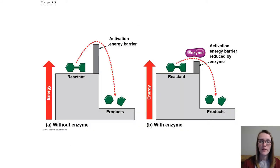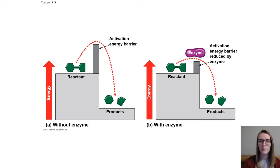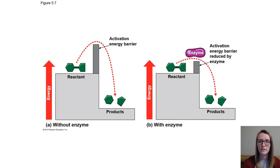We have the two diagrams side by side — one without the enzyme and the other with the enzyme. Without the enzyme, you can see that we clearly need a lot more energy than with the enzyme, because the enzyme lowers the activation energy barrier, which then helps us save energy so we can use it for different processes going on inside our body.